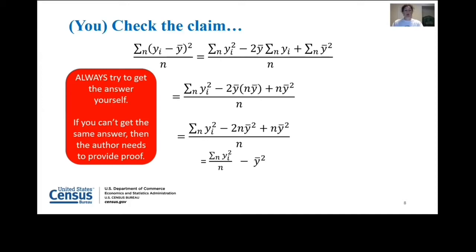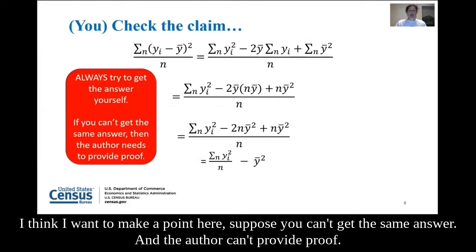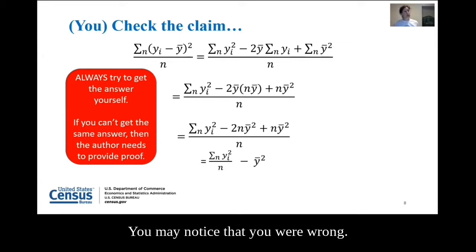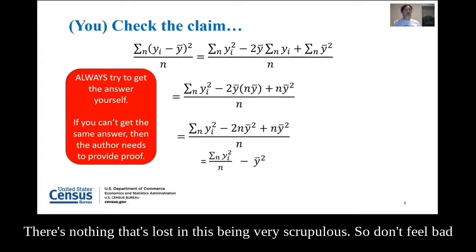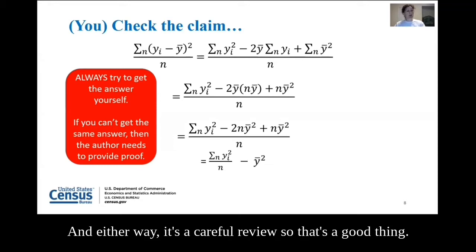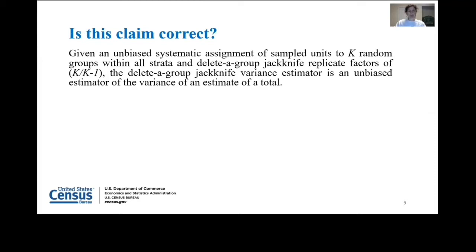Suppose you can't get the same answer and the author can't provide proof — now we have a little bit of a problem. If you can't get the same answer but the author can provide proof, you can check their math and you may notice that you were wrong. That's okay. It's a little humbling, but it doesn't hurt to double-check someone's work. Don't feel bad if you don't get the same answer, because there's a good chance you caught an error, and an equally good chance you committed one. Either way, it's a careful review — and that's a good thing.